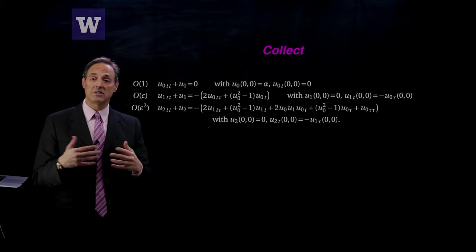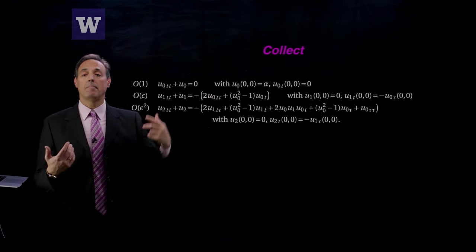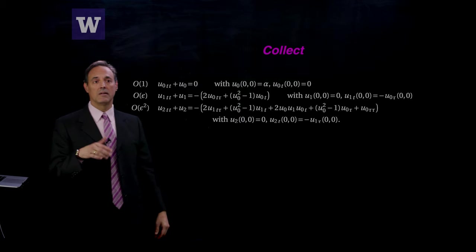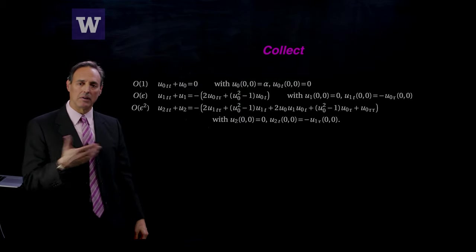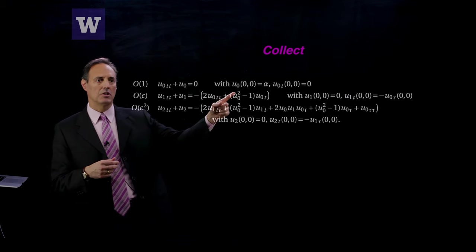Once you plug this into the van der Pol oscillator, the leading order solution is u0_tt plus u0 equals zero. The solution to this is sines and cosines. More than that, it only depends upon the fast scale t. The leading order equation is independent of the slow scale tau.